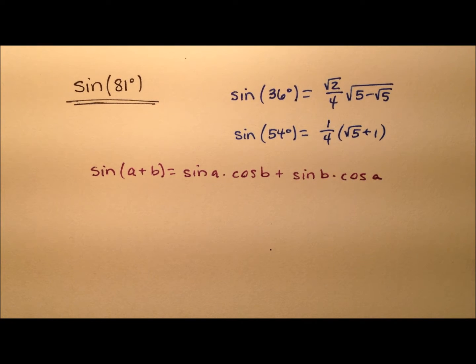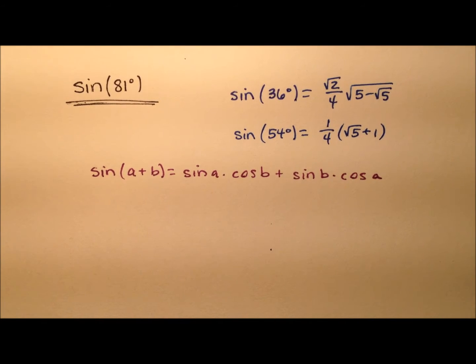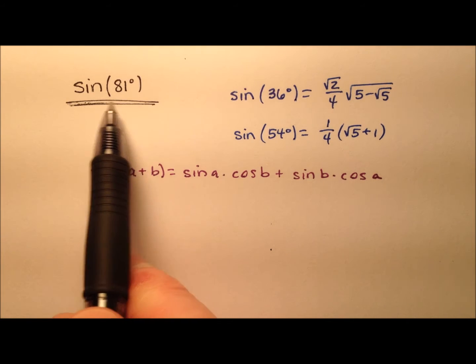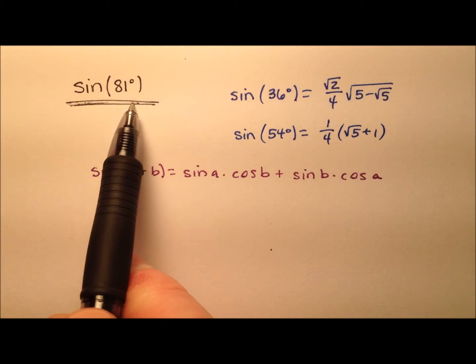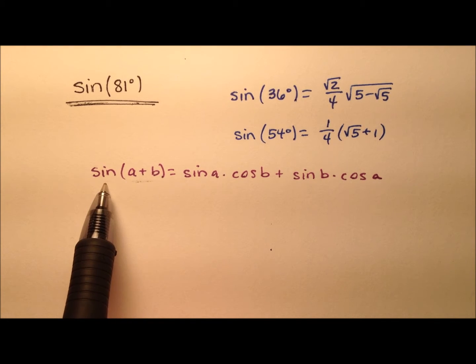In this video, I'm going to continue this series on exact values for trig functions. We're going to take a look at the sine of 81 degrees. We're going to find the exact value for the sine of 81 degrees by using this sum identity for sine.